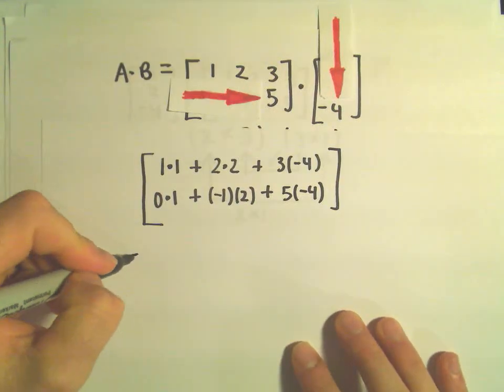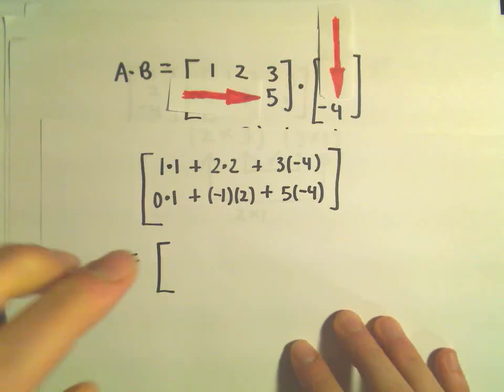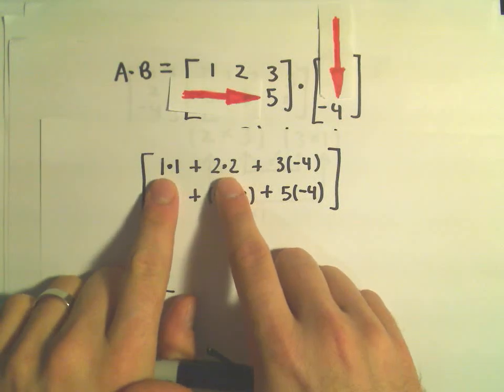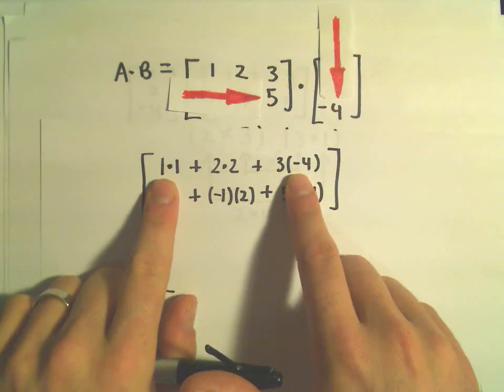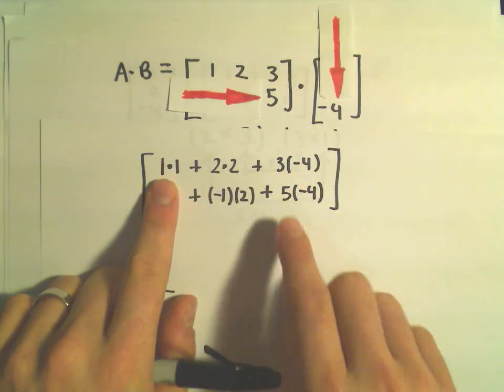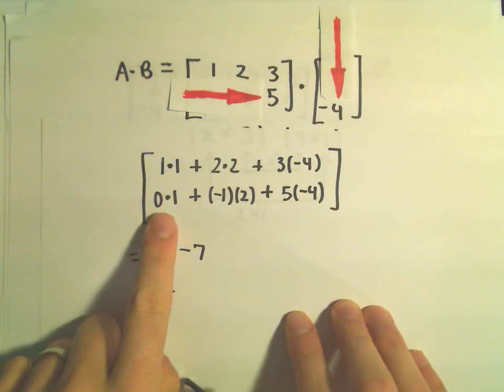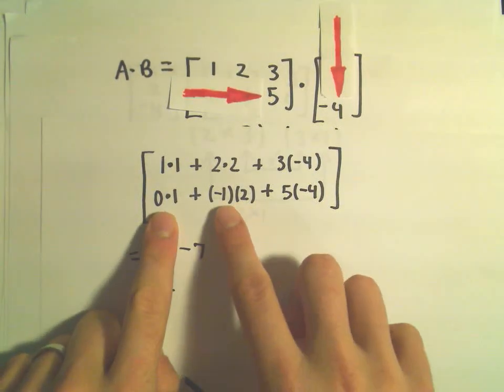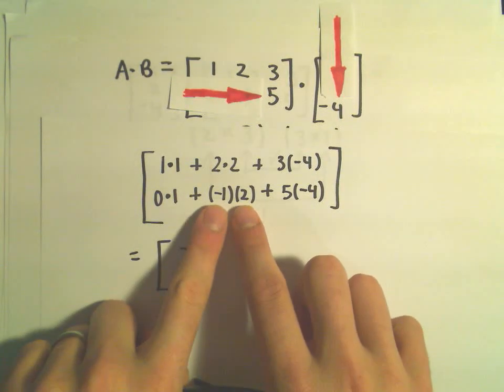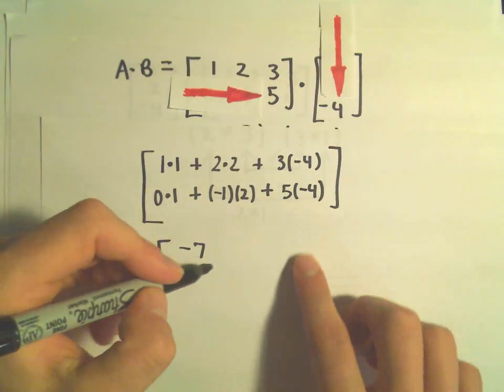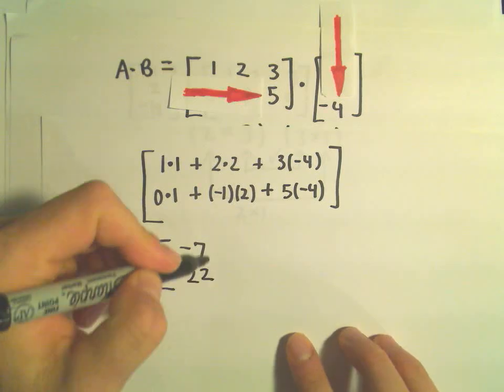And at this point, it's just doing some arithmetic and simplifying this down. It looks like we have 1 plus 4, which is going to give us 5. This is negative 12. So it looks like we have 5 minus 12, which will give us negative 7. And then, in our bottom row, we have 0. Negative 1 times 2 is negative 2. 5 times negative 4 is negative 20. Negative 2 plus negative 20 will give us negative 22.